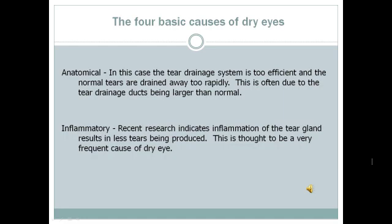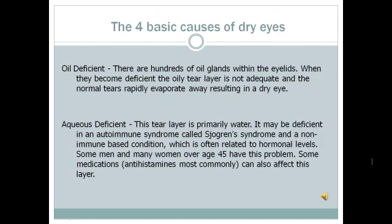This would be true in cases where the drainage canal is larger than normal, so the tears rapidly drain away. A second cause of dry eyes, and probably the most common cause, is inflammation of the tear gland. Due to the inflammation, the tear gland produces less tears, resulting in a dry eye. A third cause of dry eye is the oil-deficient cases, where the oil glands in the eyelids become dysfunctional. The resultant oily tear layer is not adequate, and the normal tears rapidly evaporate away, resulting in a dry eye.